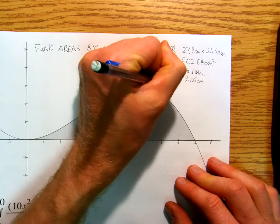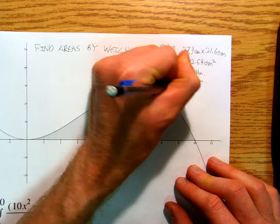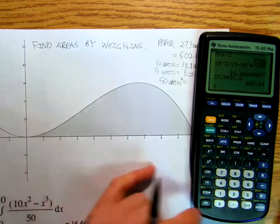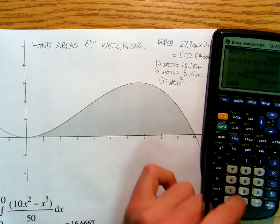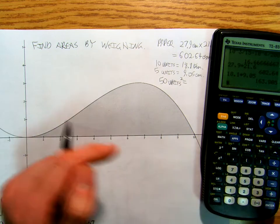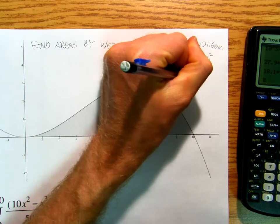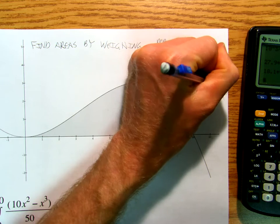So, 50 units squared is equal to 18.1 times 9.05, 163.805 centimeters squared.